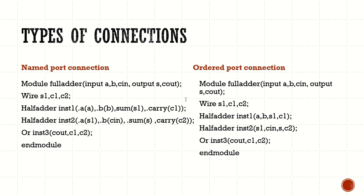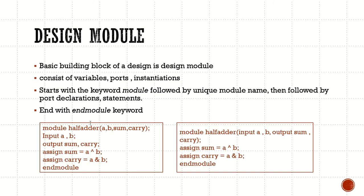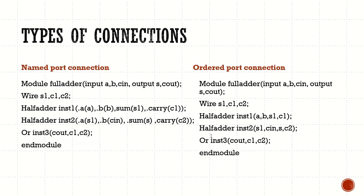In ordered port connection, we just give the signals in the same order as declared in the module. Since the half adder declared ports as A, B, sum, carry — in that order we provide A, B, S1, C1 — such that A connects to A, B connects to B, S1 connects to sum, and C1 connects to carry. That is the ordered port connection.